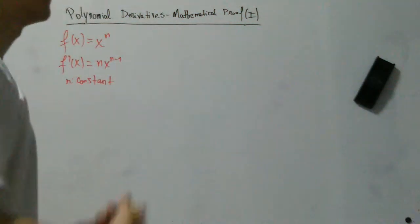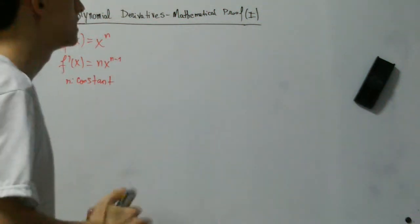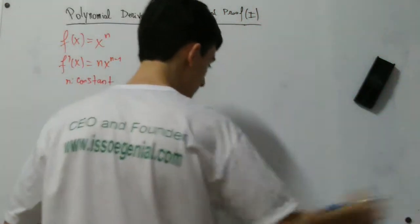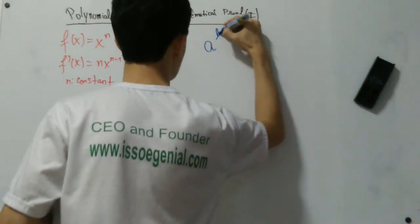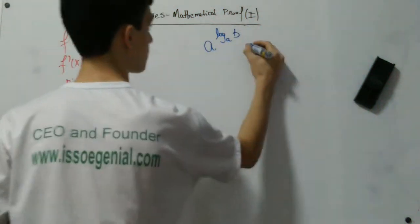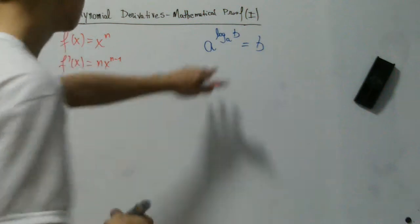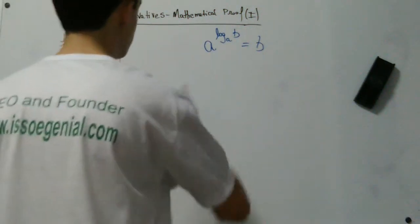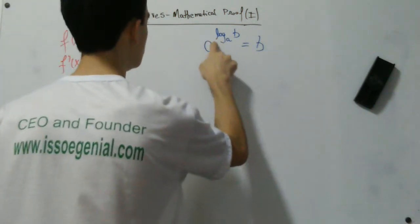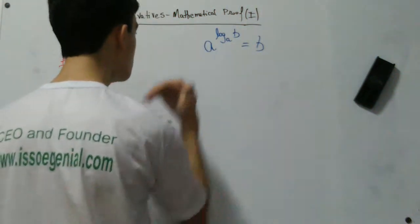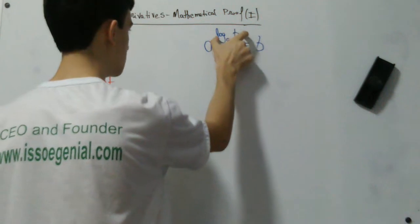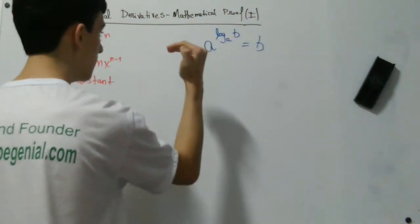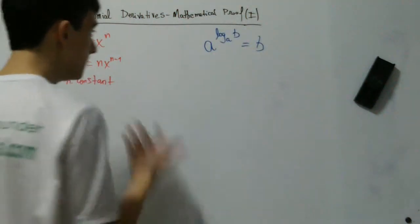Before we start the mathematical proof in this video, we're going to see a little property of logarithms that we're going to use in the proof. When we study logarithms, we see this property: if we have a number a and we raise this number to log base a of b, this is equal to b. Why is this equal to b? This logarithm is asking to which exponent we raise a in order to result in b, and we are getting the answer to this question and raising a to that number, so obviously the answer must be b.